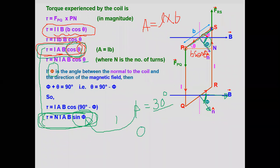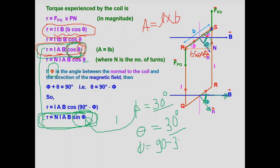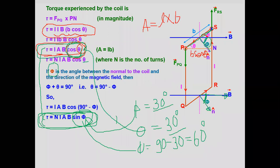Suppose θ is given as 30 degrees. The question will say: 'if the plane of the coil is making an angle of 30 degrees with the magnetic field.' When θ is given, use the cos θ equation. If you want to use the φ equation instead, find φ = 90° − θ = 60°. Both equations give exactly the same answer. You have to read the question carefully to determine whether θ or φ is given.